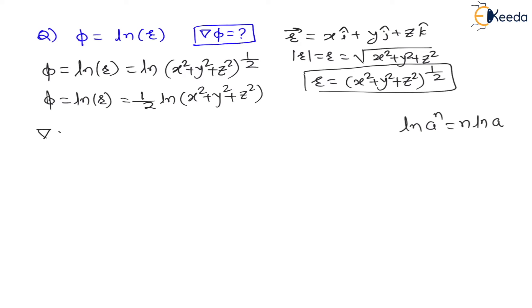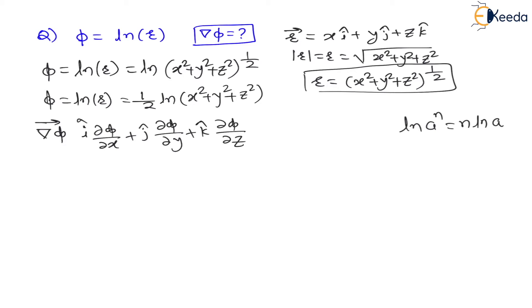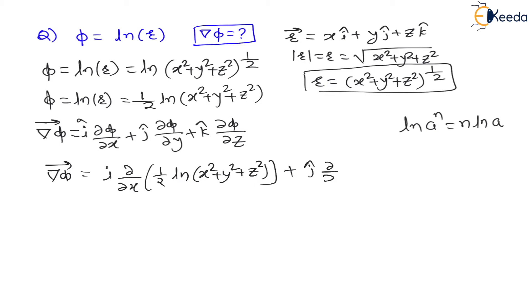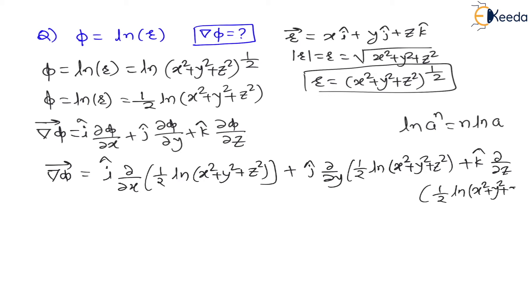Now let us find ∇φ, the gradient or del operator applied to this scalar function. The gradient is a vector quantity, written as i·(∂φ/∂x) + j·(∂φ/∂y) + k·(∂φ/∂z). Substituting φ = (1/2)·ln(x² + y² + z²), we write: ∇φ = i·∂/∂x[(1/2)ln(x²+y²+z²)] + j·∂/∂y[...] + k·∂/∂z[(1/2)ln(x²+y²+z²)].